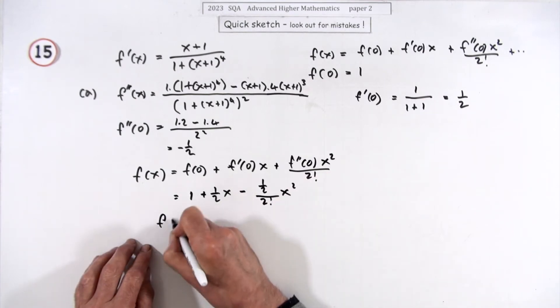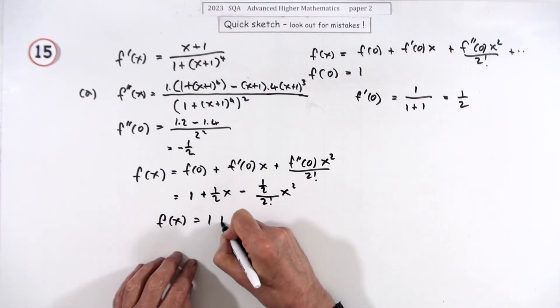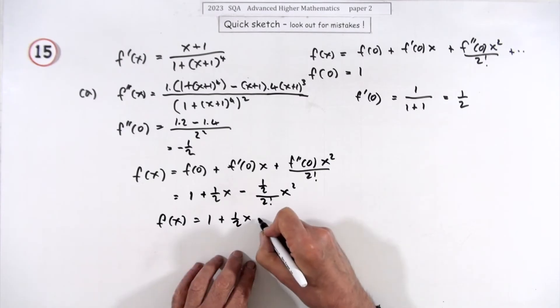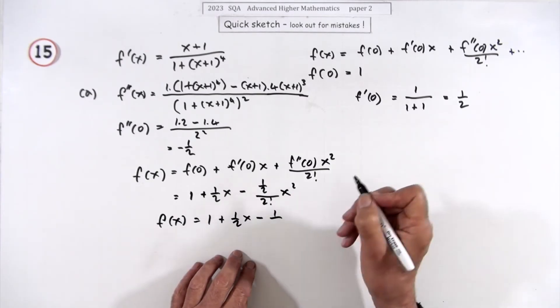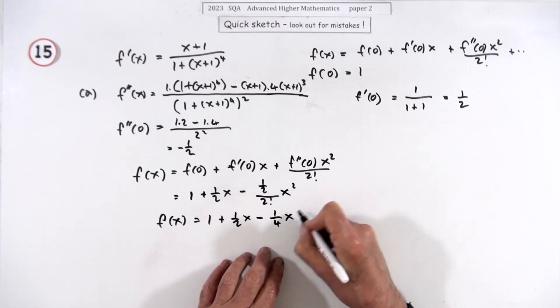So that's going to be 1 + (1/2)x - (1/2)/2! x². Finally, f(x) will be 1 + (1/2)x - (1/4)x².